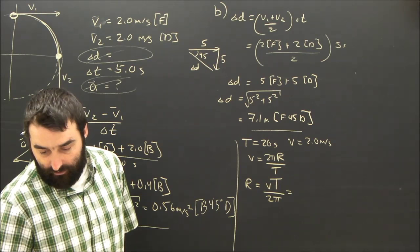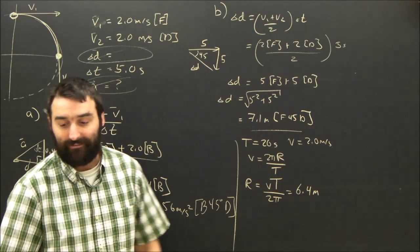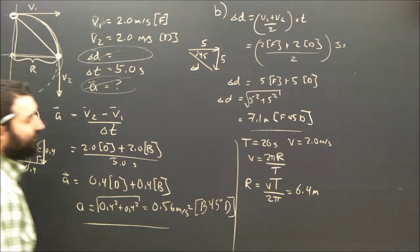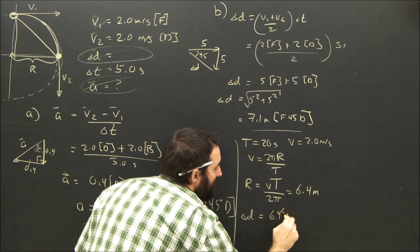So the radius of this thing is going to be the speed times the period over 2π, which is just 20 over π, because the 2's cancel. And that's going to give us a radius of 6.4 meters. 6.366 technically. Okay, what does that really help us? Well, if that's the radius, then the displacement is just a triangle where the radius is a side.